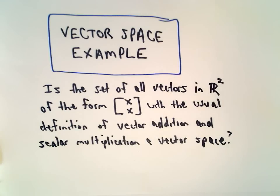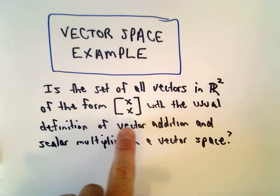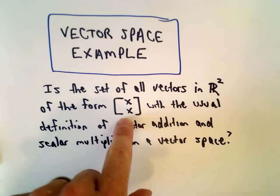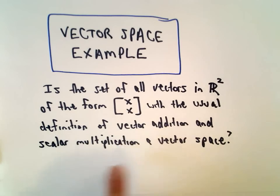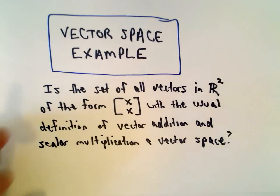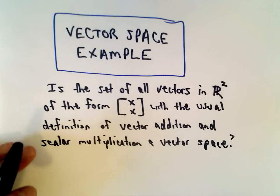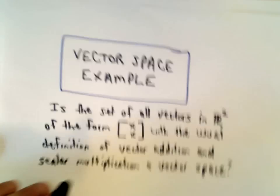In this example, we're going to determine whether or not the set of all vectors in ℝ² of the form (x, x) — where the components are the same — using the usual definition of vector addition and scalar multiplication, makes a vector space. The short answer is yes, it does, but let's go through everything.